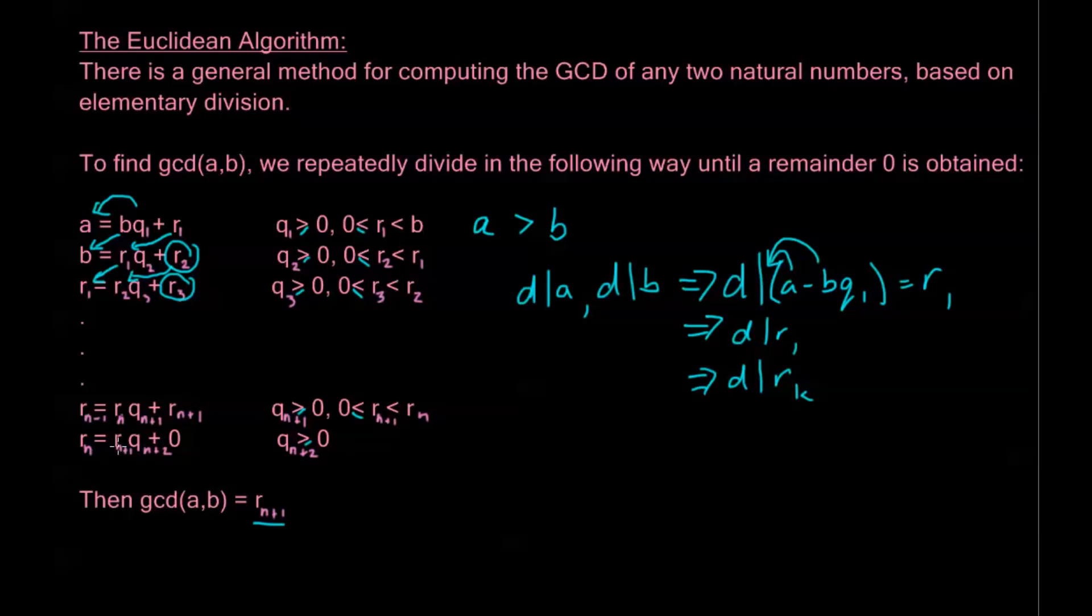Now, once we get a remainder of 0, we're going to unwrap this in the other direction. Here, I have that R_n+1 divides R_n. From my last equation, because I have a 0 here as a remainder, I have R_n equals R_n+1 times my quotient, and that means, by definition, that R_n+1 divides R_n. Now, if R_n+1 divides R_n, well, looking at the equation before that, this implies that R_n+1 divides R_n-1 from this equation here.